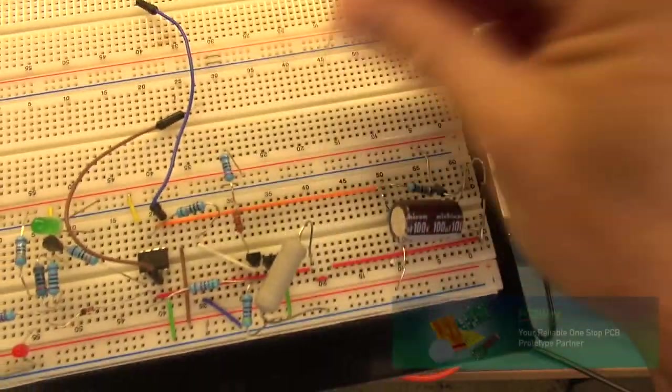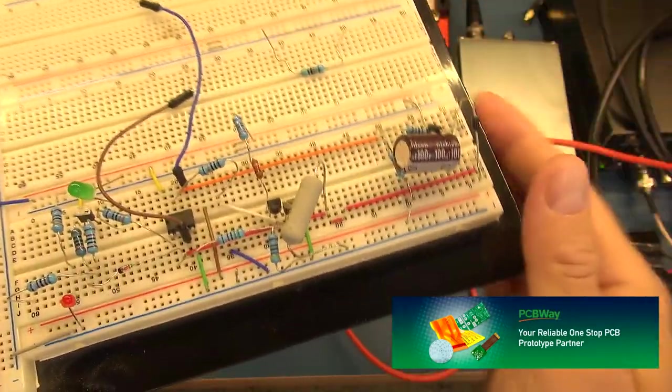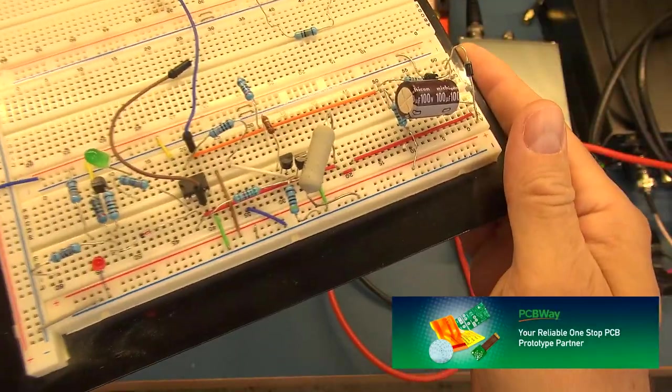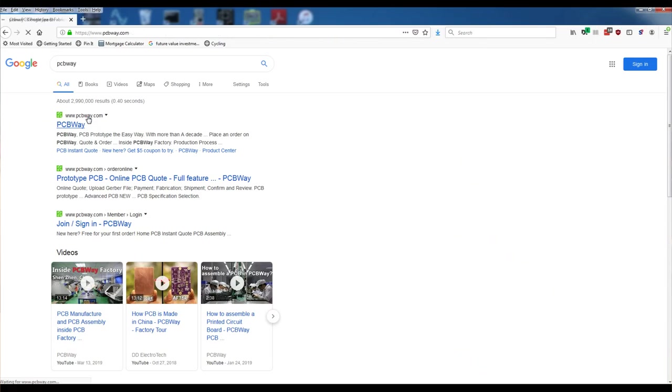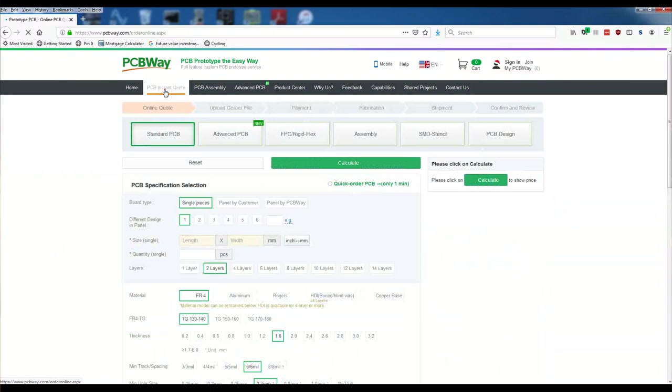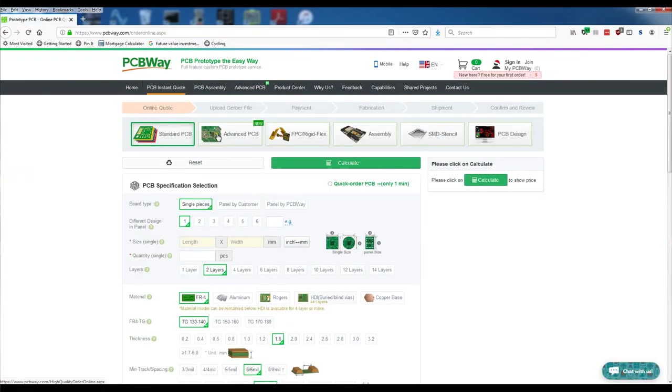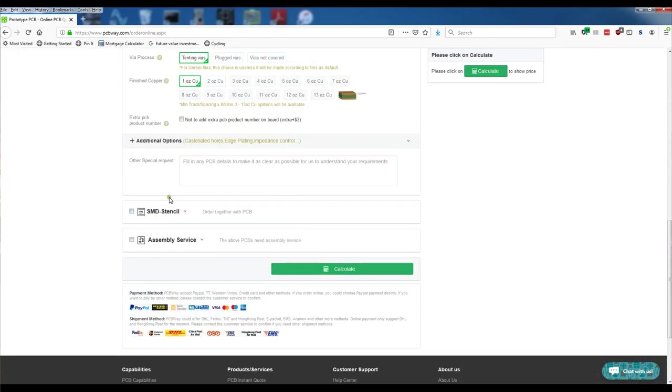If you are like me and end up prototyping on a breadboard where your components end up being loose and making it very difficult to troubleshoot, take your projects or your prototyping to the next level by going to PCBWay and getting a proper PCB manufactured for your prototyping or your next project. Simply head over to the PCBWay website and click on instant quote and there you can provide the specifications and the requirements for your project and simply place your order.